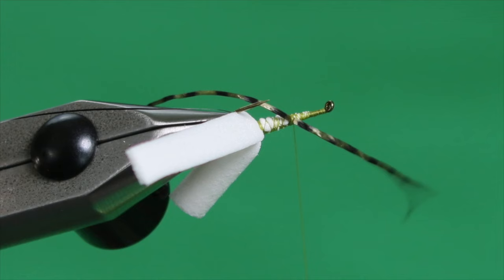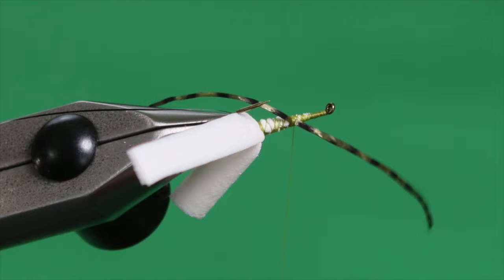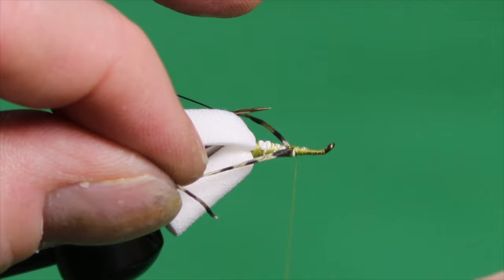And that's got that front leg, this leg here closest to me, positioned in the 45 degree angle I want. So I'll go over a couple more wraps, one on top of each other to further secure it. Then I'll take a couple of thread wraps to isolate those wraps.